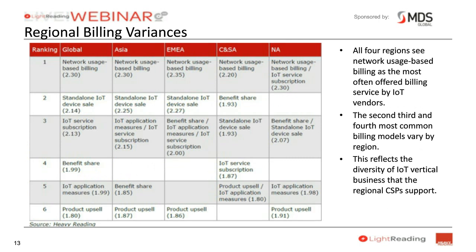When we looked at regional billing variances, the regions were focusing on their markets, and this was reflected in the billing services. Overall, network usage-based billing was the number one mechanism — in Asia, Europe, and Central and South America. But in the North American market, it was a combination of usage-based billing services and subscription for IoT devices. Walking across the regions, it starts to break up as you look at the different rankings. The most important thing is to reflect the diversity of the IoT vertical businesses that each of the CSPs is serving.